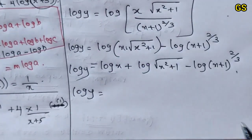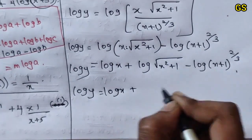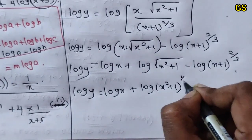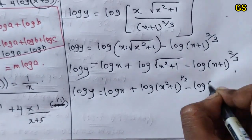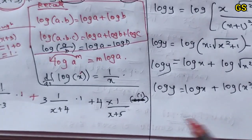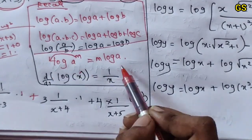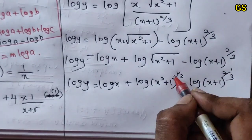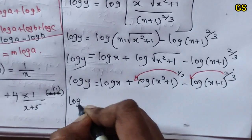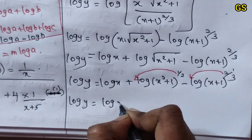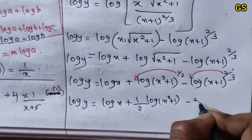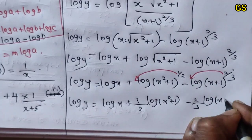Applying the log power rule m into log a: log y equals log x plus 1/2 · log(x² plus 1) minus 2/3 · log(x plus 1). This is the expanded form ready for differentiation.